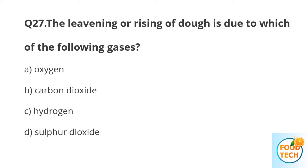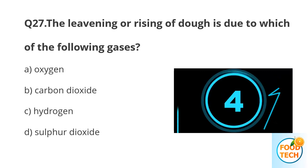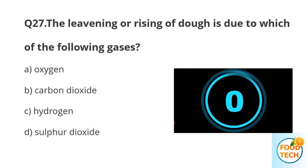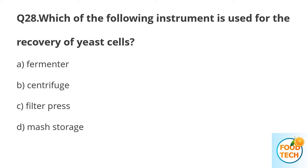Question 27. Which of the following gas is produced during fermentation? A. Oxygen. B. Carbon dioxide. C. Hydrogen. D. Sulphur oxide. Question 28. Which of the following is used for the recovery of yeast? A. Fermenter. B. Centrifuge. C. Filter press. D. Mass storage.